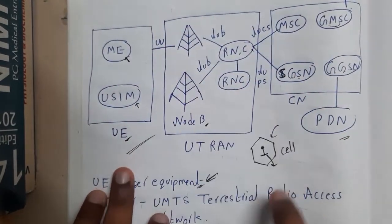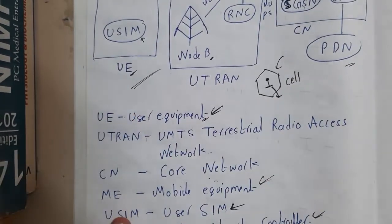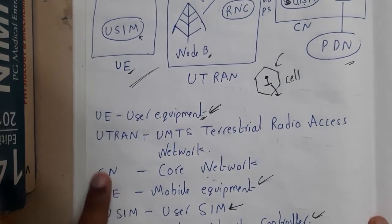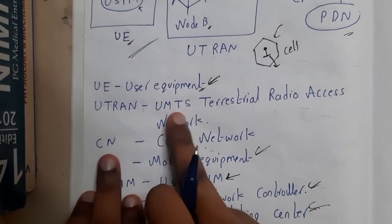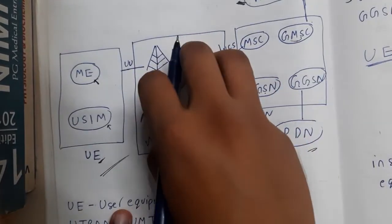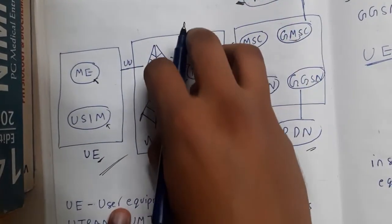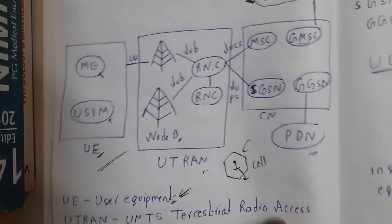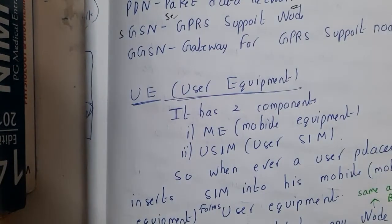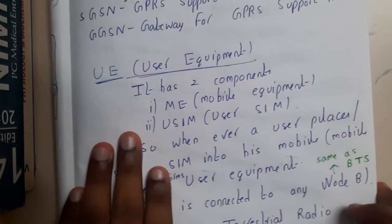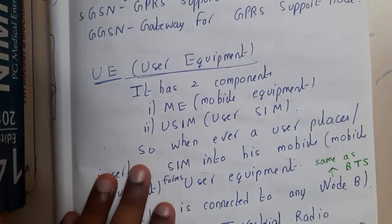The whole mobile device is called UE. Similarly, the entire radio access portion is called UTRAN — UMTS Terrestrial Radio Access Network. UTRAN is the main component; you can say it is the heart or brain of UMTS.